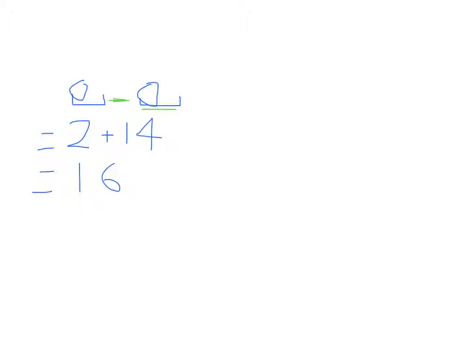So -7 multiplied by -2, positive 14. What am I left with? I've got this guy out, I've got that guy out, I'm left with 2. Okay? 2 plus 14, 16. Super easy. Really common mistake to make.